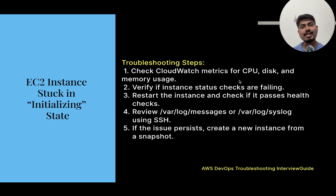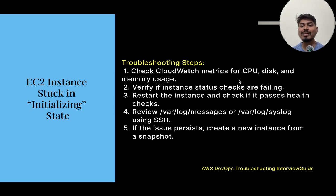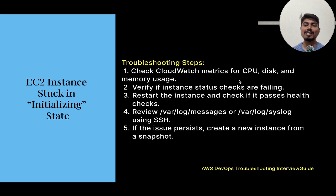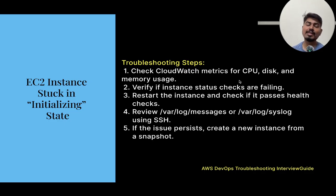The next question is: EC2 instance stuck in initialization state — how do we troubleshoot? First, check CloudWatch metrics for CPU, disk, and memory usage, as high utilization may prevent initialization. Next, verify the instance status checks — there are three checks: hardware, OS-related issues, and root volume-related issues.